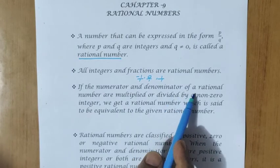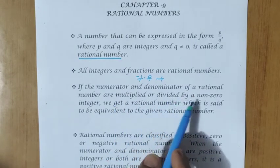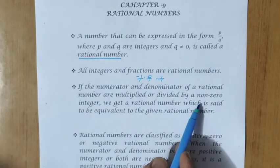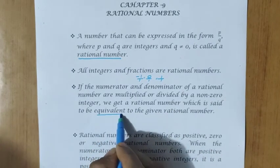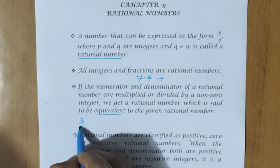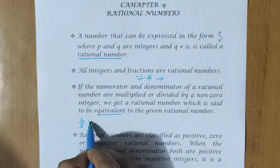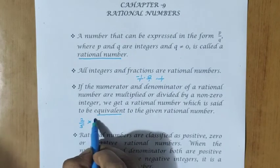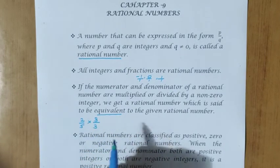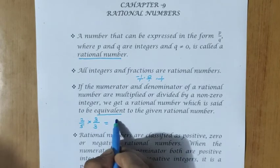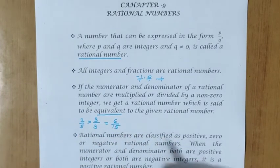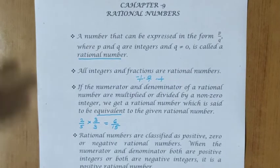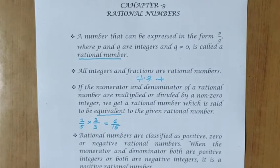If the numerator and denominator of a rational number are multiplied or divided by a non-zero integer, we get a rational number which is said to be equivalent. For example, 2 by 5 multiplied and divided by 3 gives 6 by 15. When you simplify 6 by 15, you get back 2 by 5. This is called an equivalent rational number.